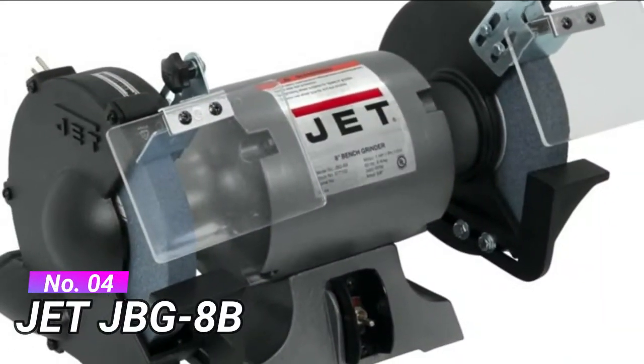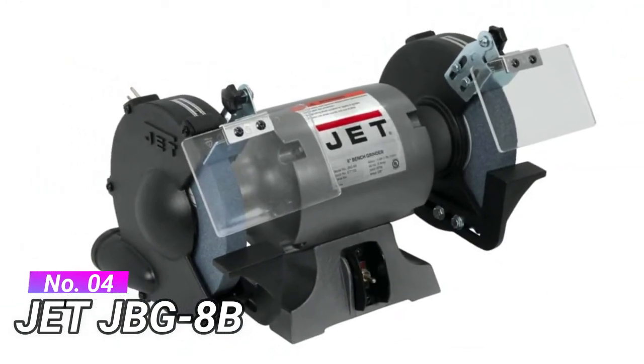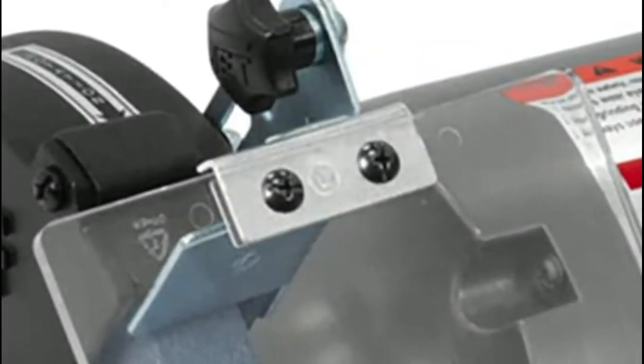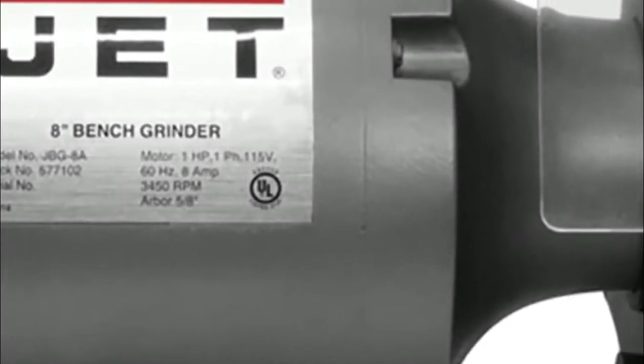Number 4, Jet JBG8B Long Machine Life. Totally enclosed pre-lubricated ball bearings. No shifting. Rubber mounts prevent movement. Built for durability. Cast iron wheel guards and dust vents. Variable grinding. Fine, 60 grit and coarse 36 grit vitrified grinding wheels.